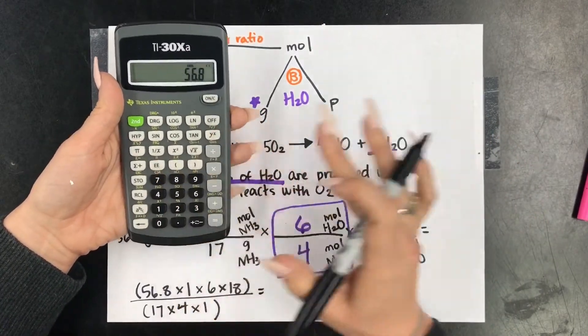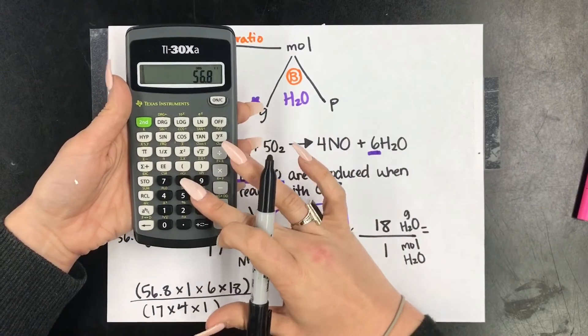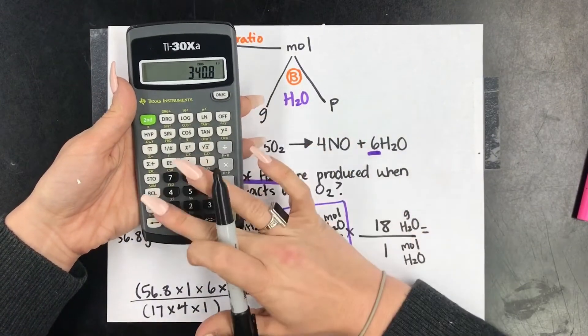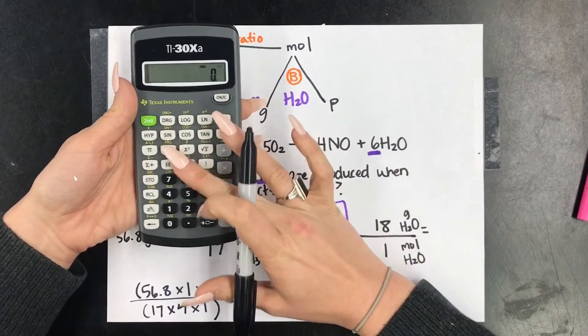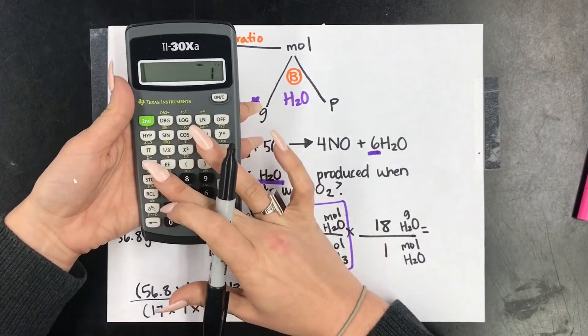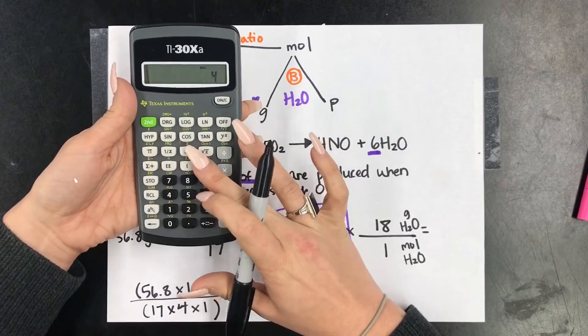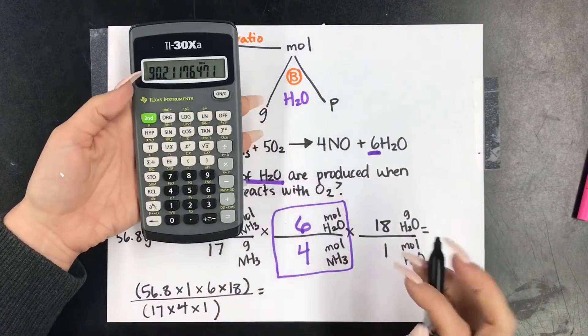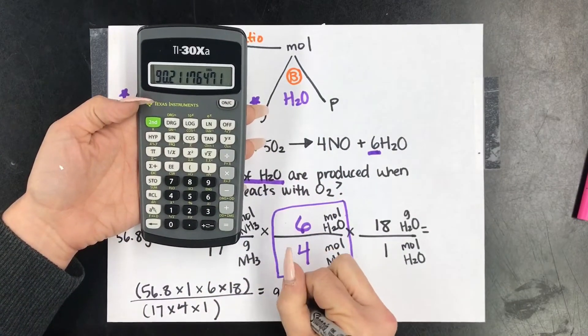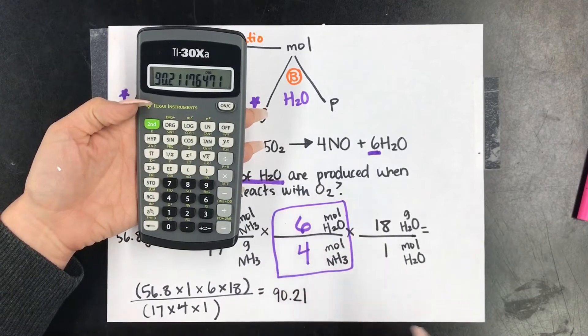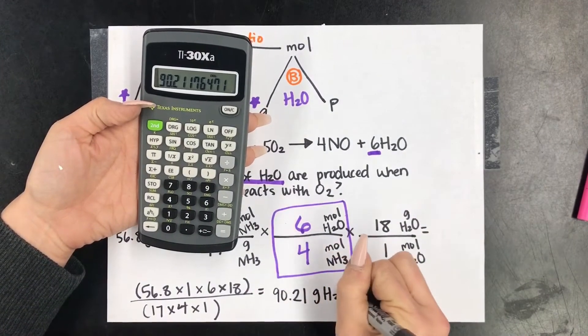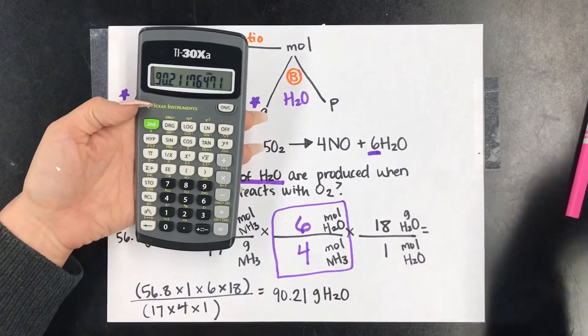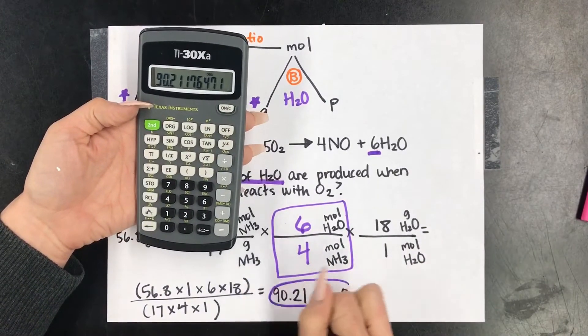So we're going to put this in our calculator. 56.8 times 6 times 18, close the parentheses, divided by new set of parentheses, 17 times 4, close parentheses. So 90.21. And then make sure my unit, grams of H2O. So this is our final answer.